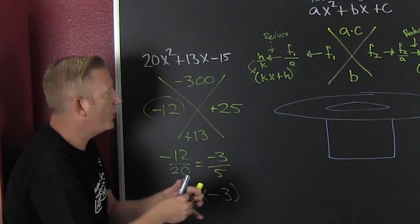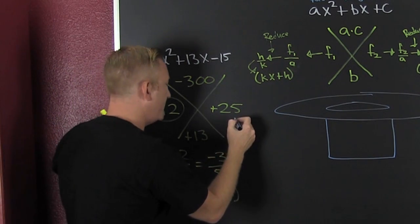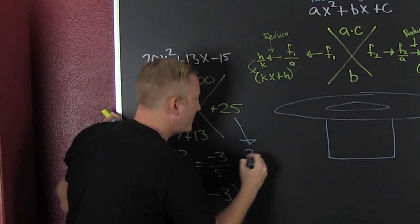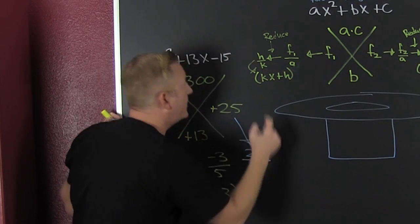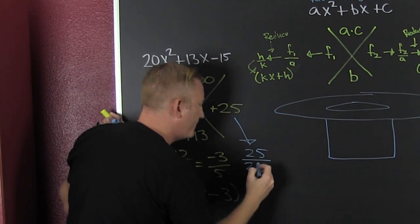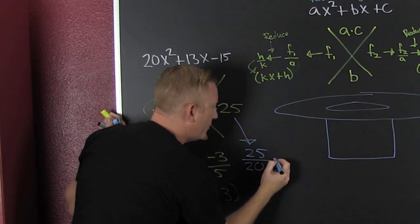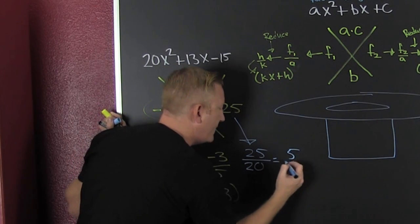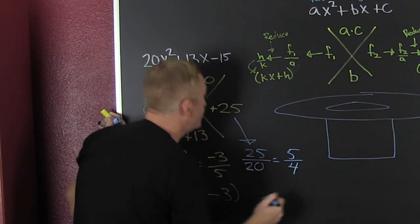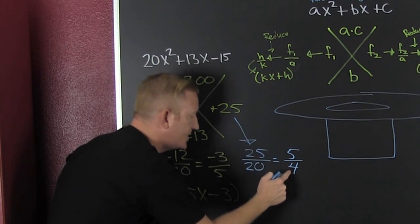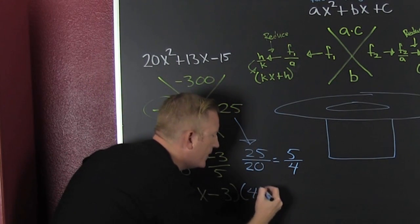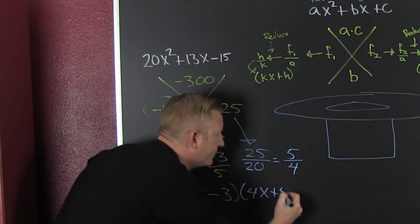And then I'm going to go and I'm going to do it here too. It's the 25 over my leading term 20. So we see that those both have a five in it. So that's five over four. Sure.